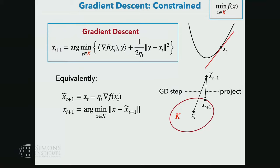The question was whether this projected gradient descent is truly equivalent. Yes, if we just take the gradient of the optimization problem and set it to zero, we get the usual unconstrained gradient descent update. And then we have to project back into the feasible domain to get the constrained version.